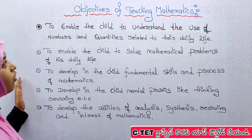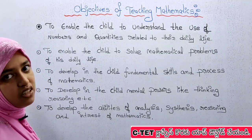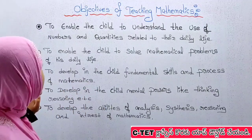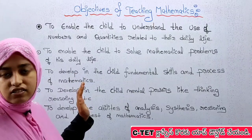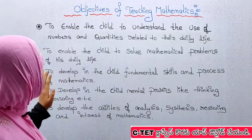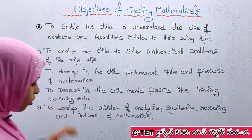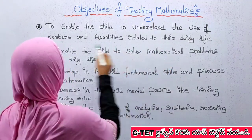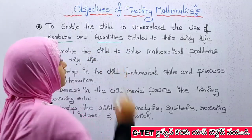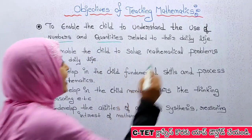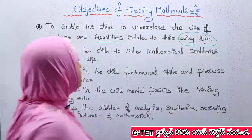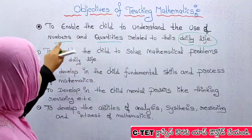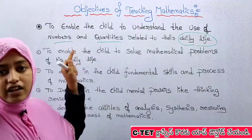What are the objectives? We will discuss the objectives at the primary level. The first one is to enable the child to understand the use of numbers and quantities related to their daily life.